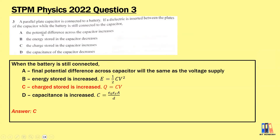First option — potential difference across the capacitor increases: No, it will be constant, the same as the voltage supply. Second — energy stored in the capacitor decreases: No, because referring to the formula half CV², where V is constant, with the dielectric we have higher capacitance, so the energy stored should be increased.